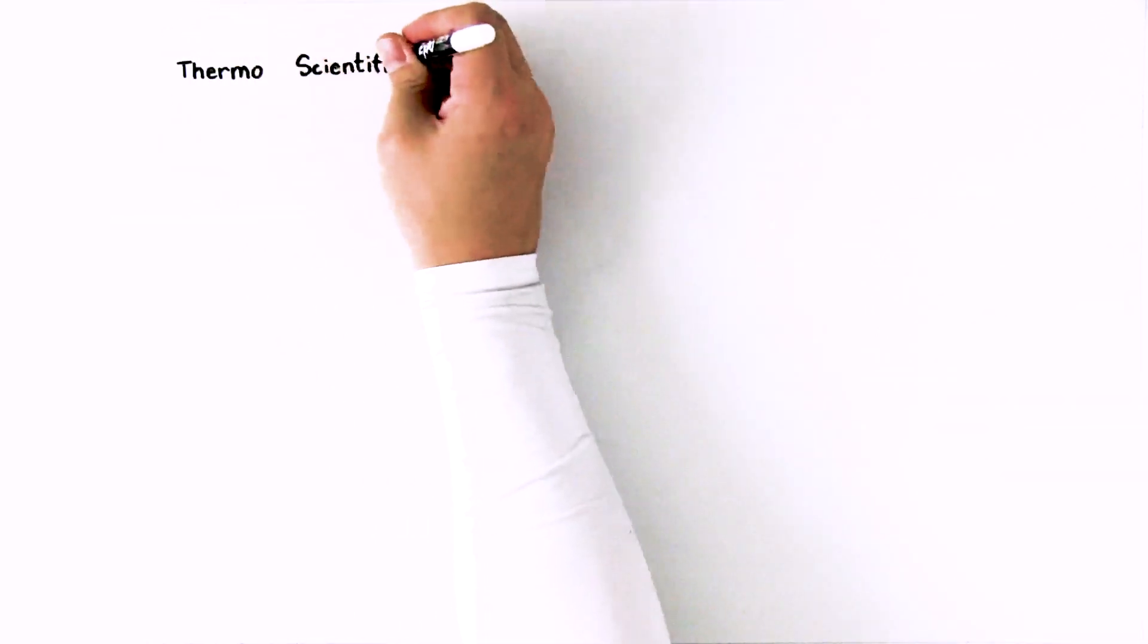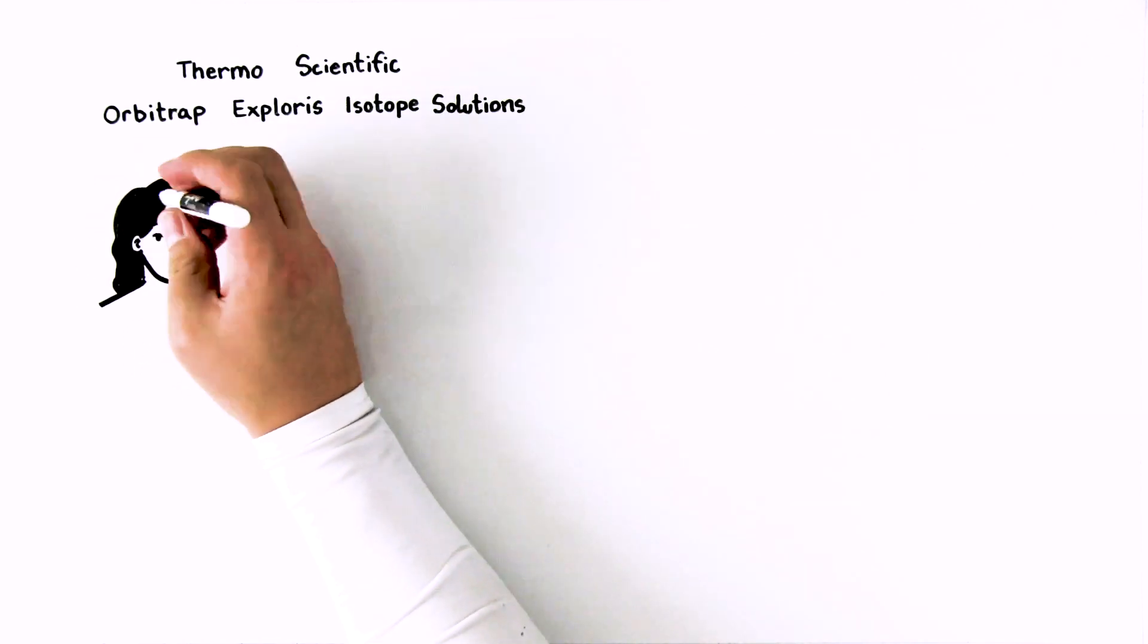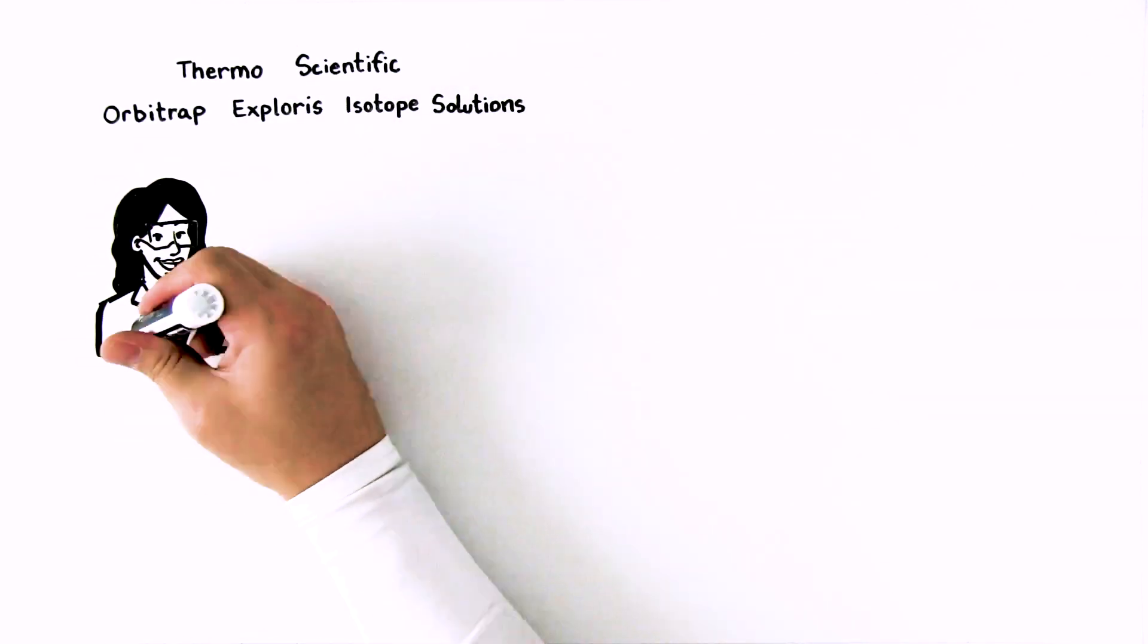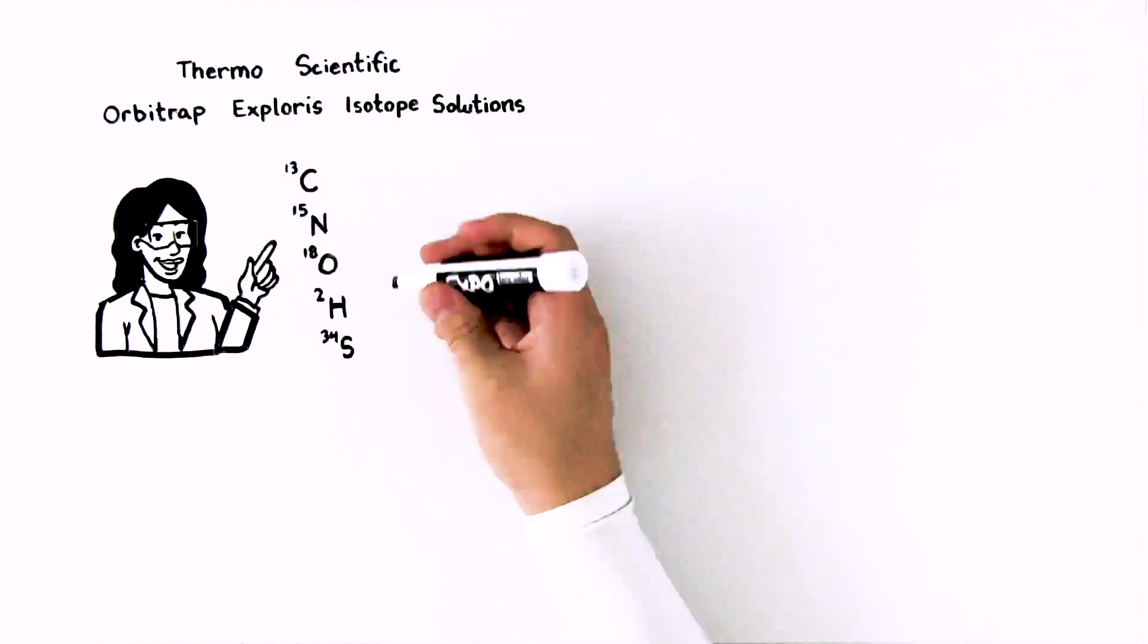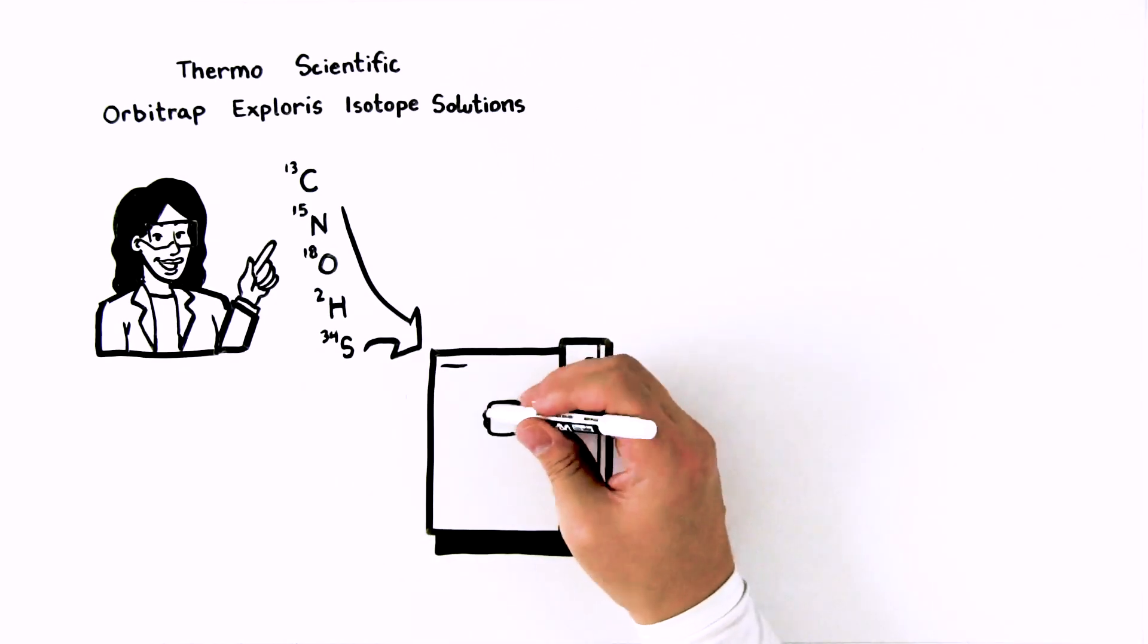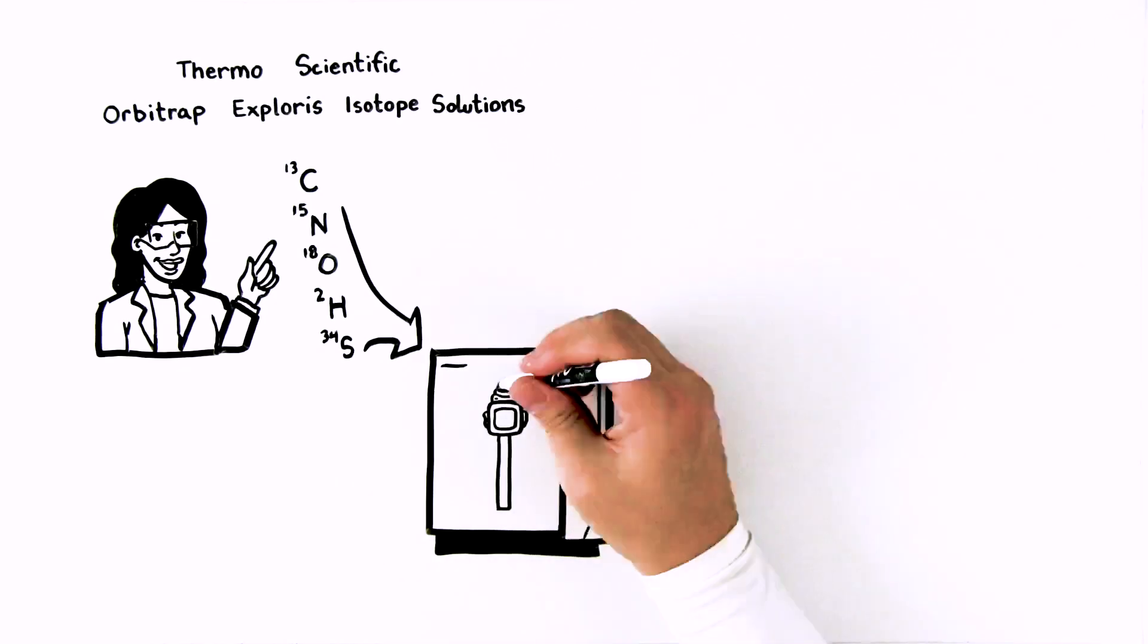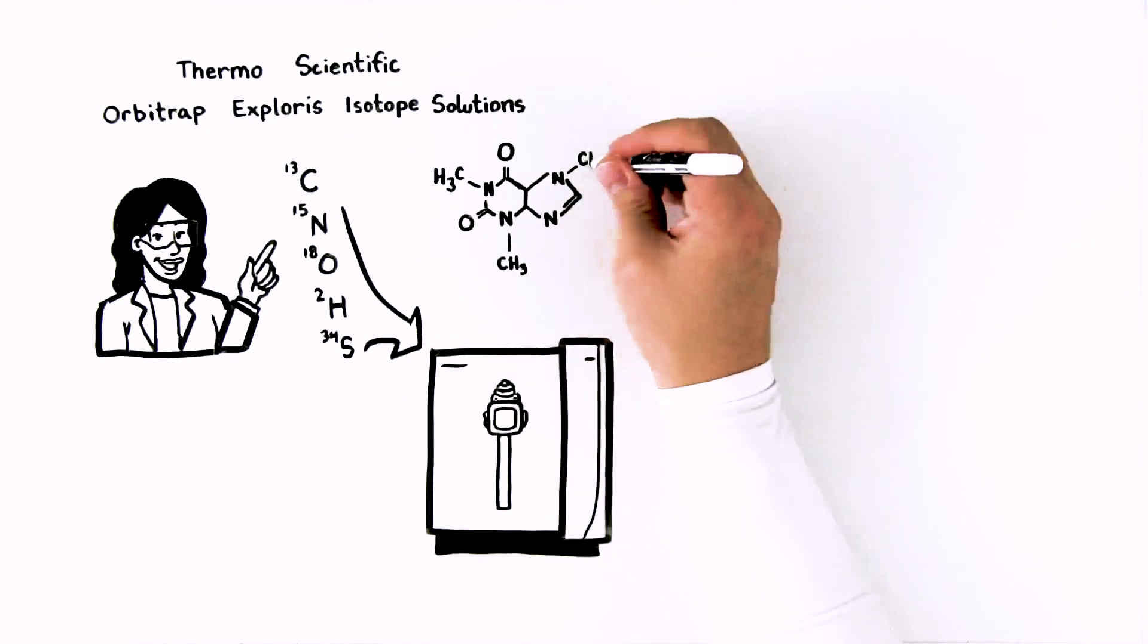Now you can with Thermoscientific Orbitrap Explorus Isotope Solutions. You are able to determine the isotopic composition of carbon, nitrogen, oxygen, hydrogen, and sulfur simultaneously by direct infusion of samples into the system. Let's look at what happens with caffeine during and after infusion in Orbitrap Explorus IRMS.